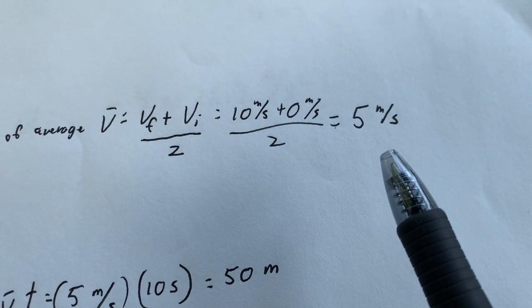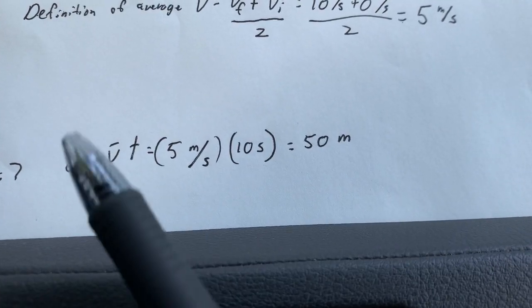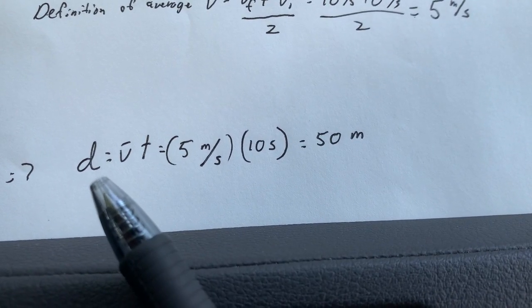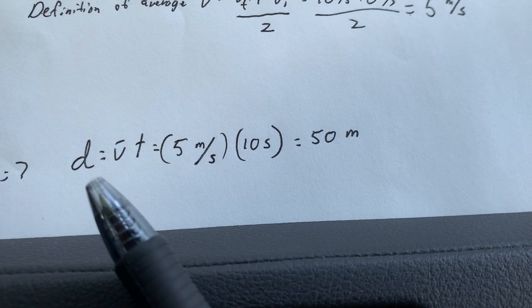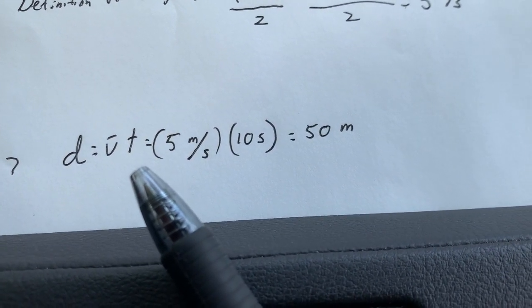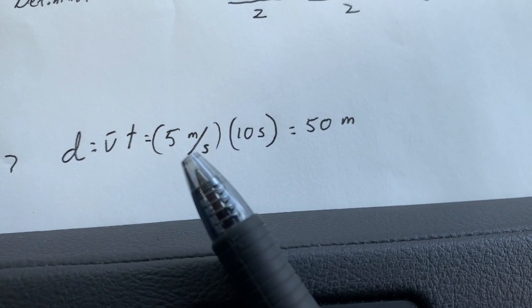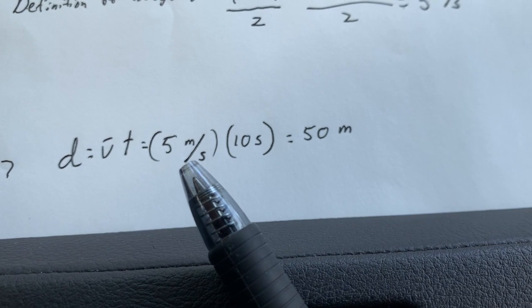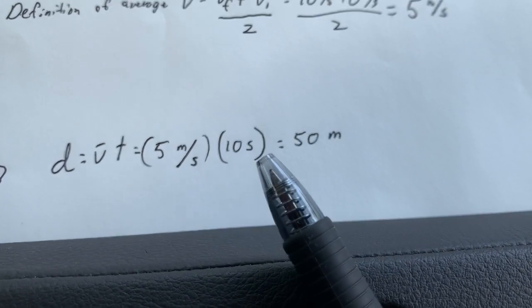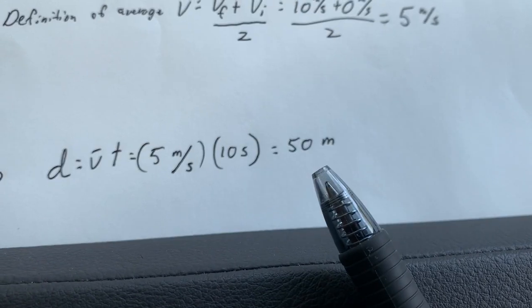Now, once you have that number, you can use that down here to get a distance. Solve the average velocity equation here for distance. Distance equals V bar times T. You undo dividing by time by multiplying by time. And you use that 5 meters per second that you got for the average velocity times the 10 seconds. And that'll get you the 50 meters.